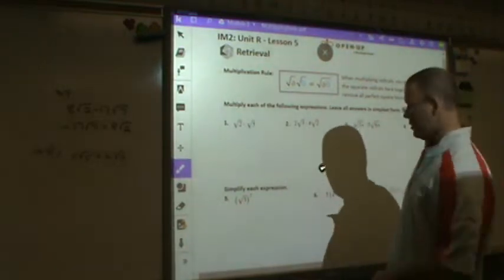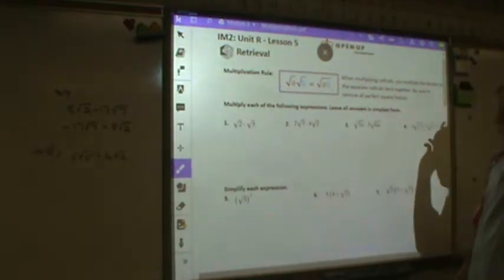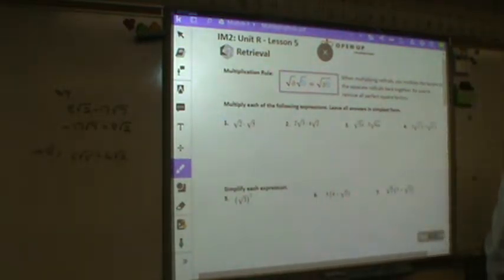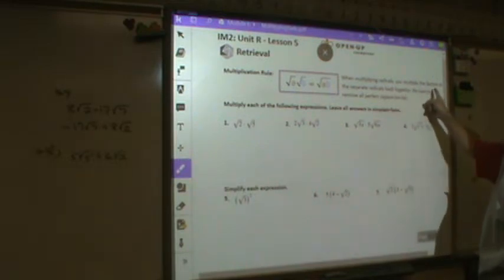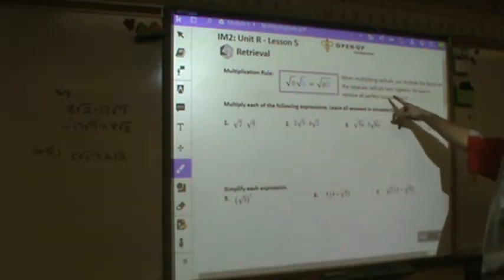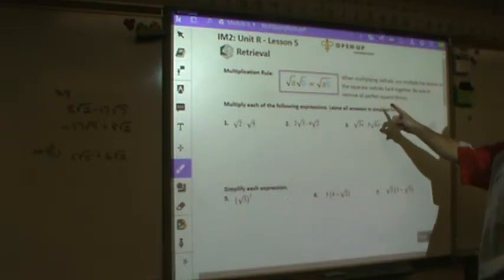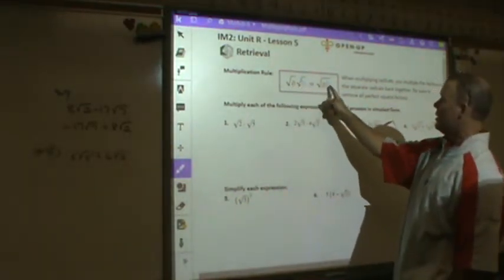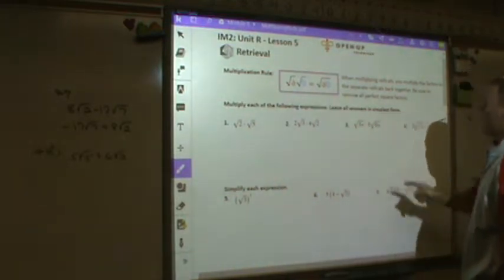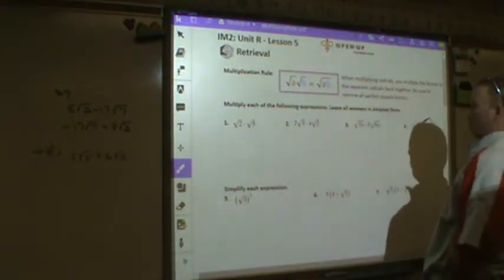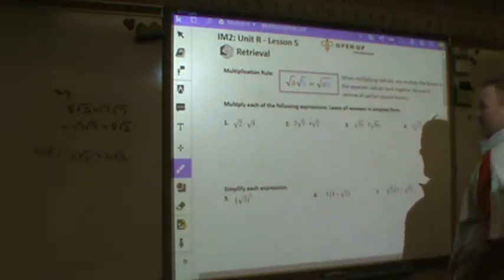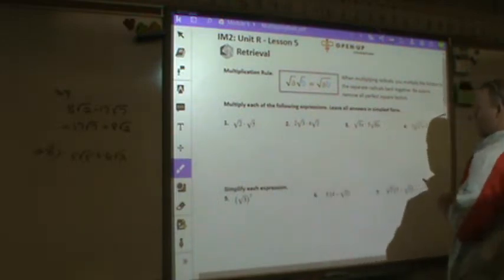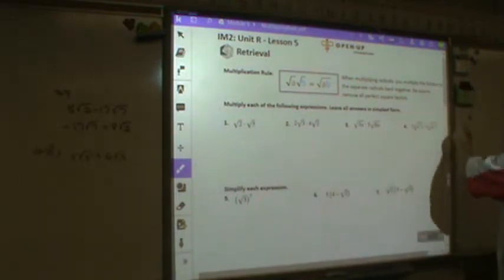All right. A couple of examples here that we started with and I'm going to bounce around and hit a few of these problems. It says when multiplying radicals, you multiply the factors in the separate radicals back together. So we're going to multiply, like here, they give you an example. Radical a, radical b, they can become radical ab. And we want to be sure to remove all perfect squares. So I'm just going to start with, actually I'm going to do number three.